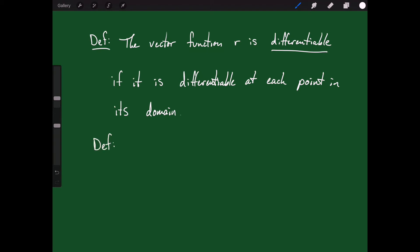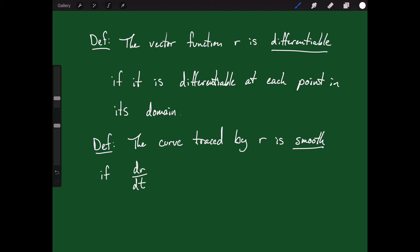Another definition: the curve traced by this vector-valued function r is smooth if dr/dt is continuous and never the zero vector. So we call a curve smooth if it's a nice continuous function and we never get the zero vector.